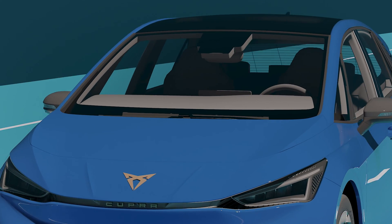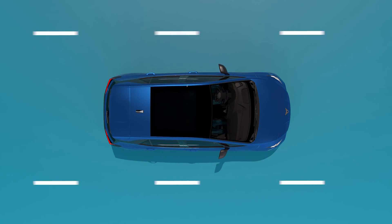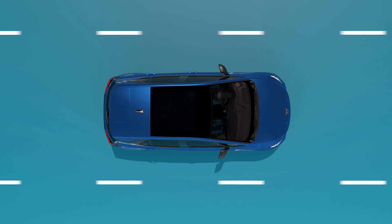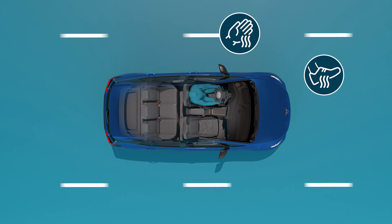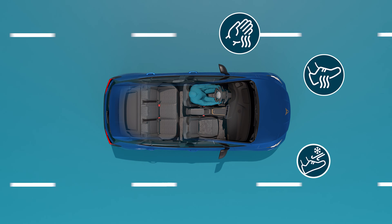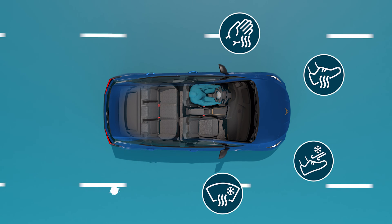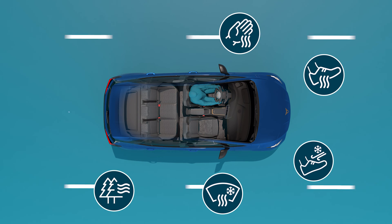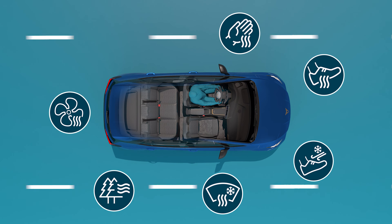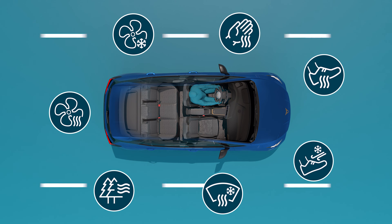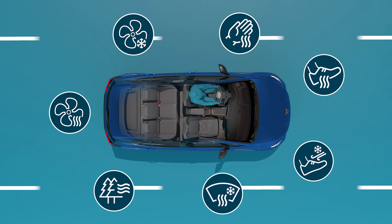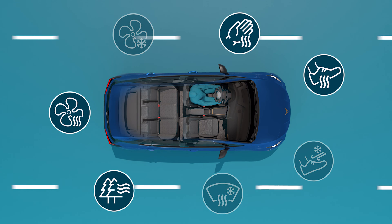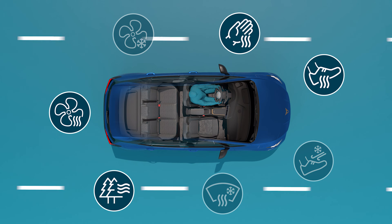iClimate features automatically adjust the air conditioning for a set time to instantly warm your hands, warm or cool your feet, defog the windows, or quickly provide fresh warm or cool air. Depending on the weather conditions, some functions will not be offered and will appear dimmed on the screen.